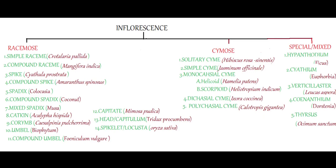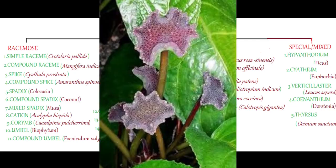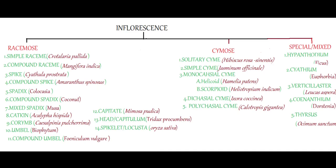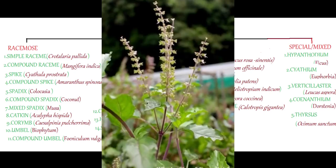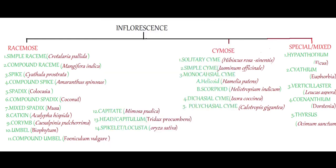The fourth one is xenanthium — the characteristic feature of Dorstenia of Moraceae. Here the receptacle is modified into a saucer-shaped structure with the margin slightly curved up. Inside this saucer-shaped structure, sessile flowers are arranged. Example: Dorstenia. The last type of special inflorescence is thyrse — the characteristic inflorescence of Ocimum. Here simple cymes are arranged in racemose manner. A cluster of three pedicellate flowers is arranged on an indefinite inflorescence axis in acropetal succession. Example: Ocimum sanctum.